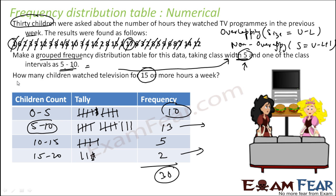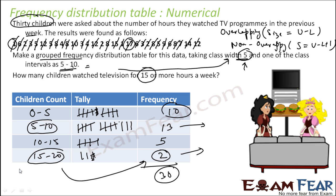Using raw data it is difficult to comment — even finding the maximum required a lot of effort. With this grouped information, a lot of things can be done. For example, a TV company can use this to promote different kinds of TV. A teacher can use this data to inform the parents of the 2 children who watch excessively, and urge them to ensure the kids spend more time studying than watching TV.